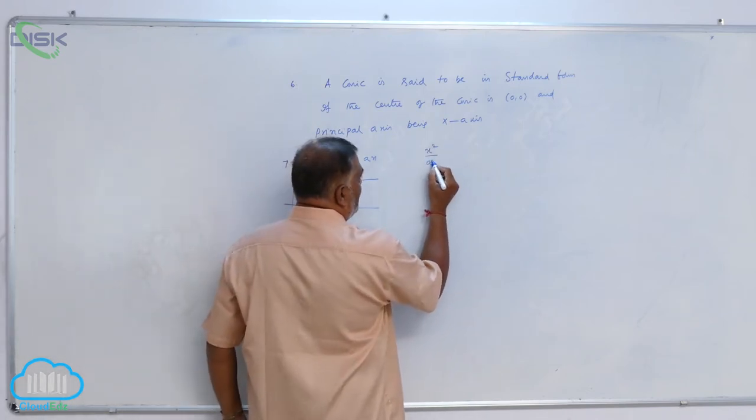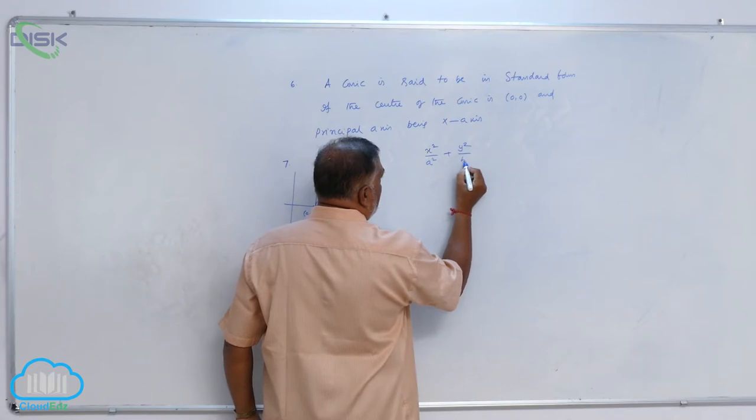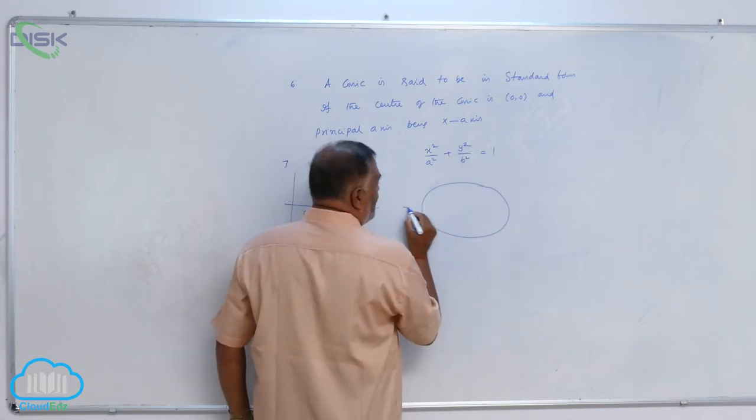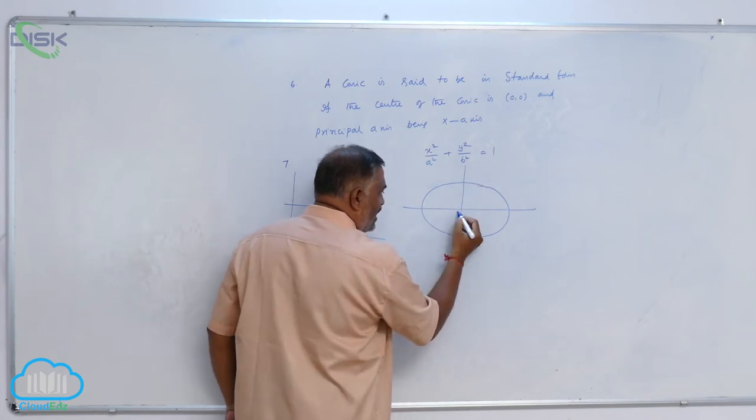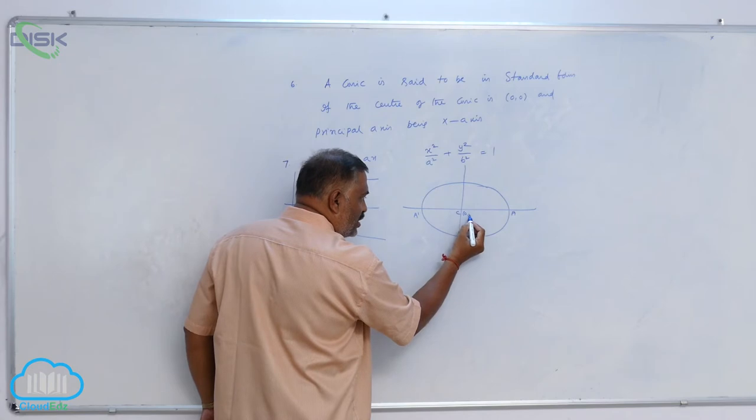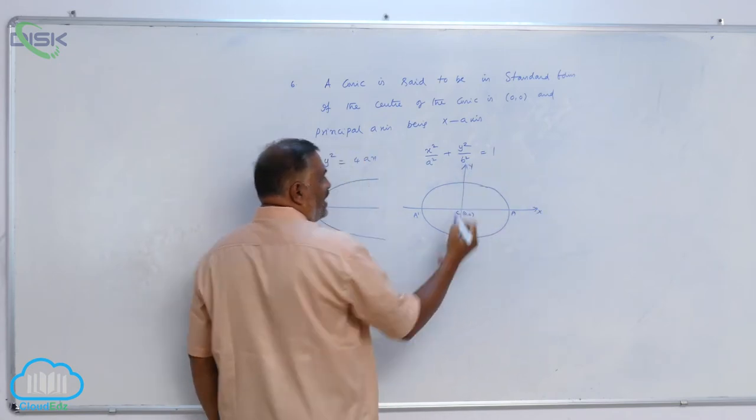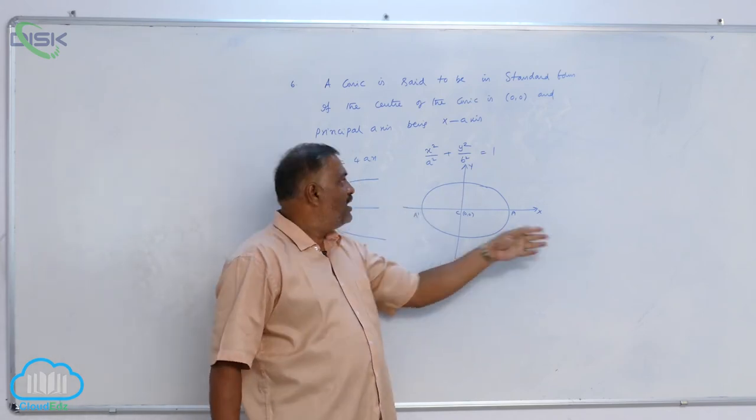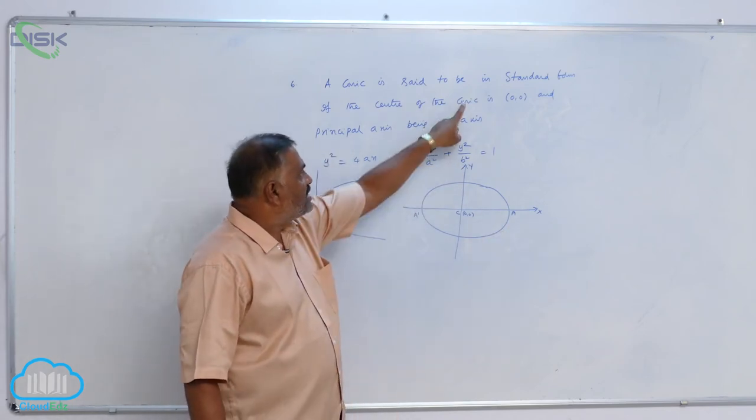In case of an ellipse, x²/a² + y²/b² = 1, you can observe very clearly this is the center, A and A' are here. This is (0,0), this is the x-axis, this is the y-axis. You observe that the principal axis is the x-axis and the center of the conic is (0,0).